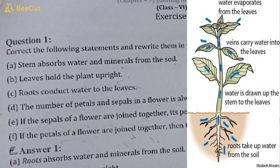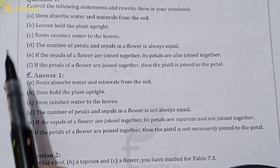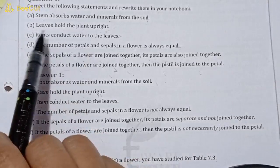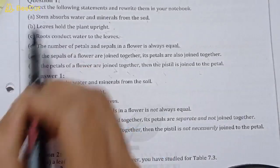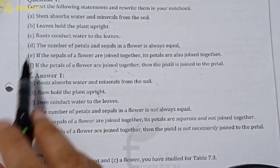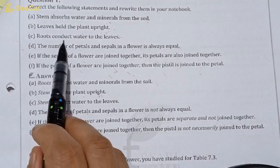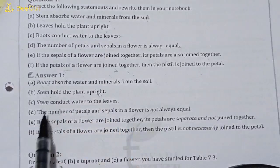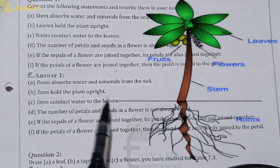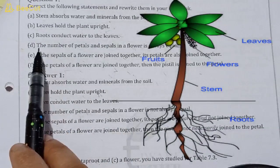Question number two: leaves hold the plant upright. Leaves help the plant stand straight. The answer is wrong. Stem holds the plant upright. Next: roots conduct water to the leaves. The answer is stem conducts the water to the leaves.